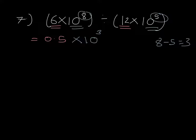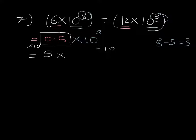Question 7: we have 6 divided by 12, which gives us 0.5, then 10 to the 8 divided by 10 to the 5, giving us times 10 to the power of 3 by subtracting our indices. Now, this answer is not in standard form because 0.5 is not between 1 and 10, so we multiply this by 10 to make it 5, which means we divide the power part by 10, making 10 to the power of 3 become 10 squared.